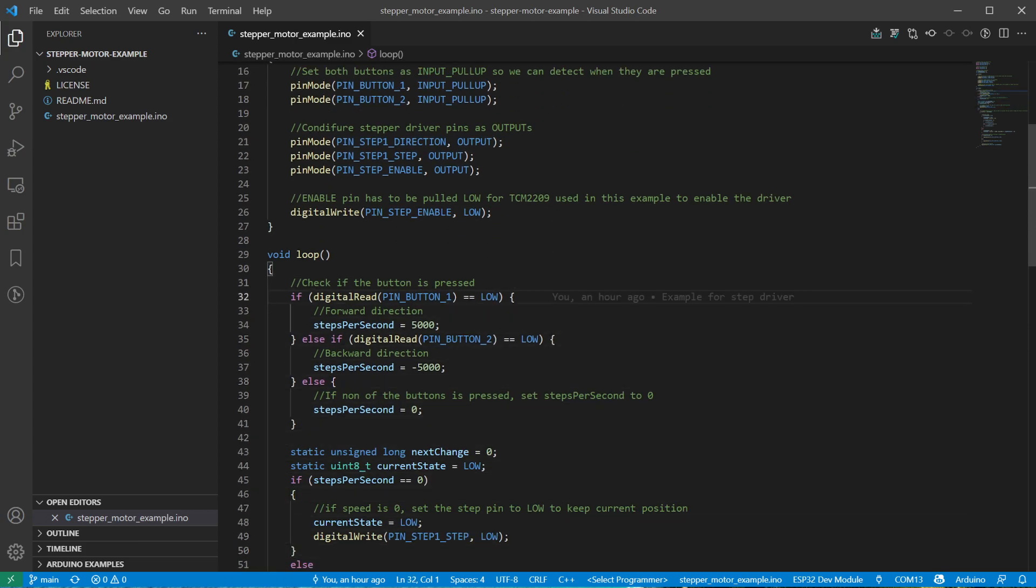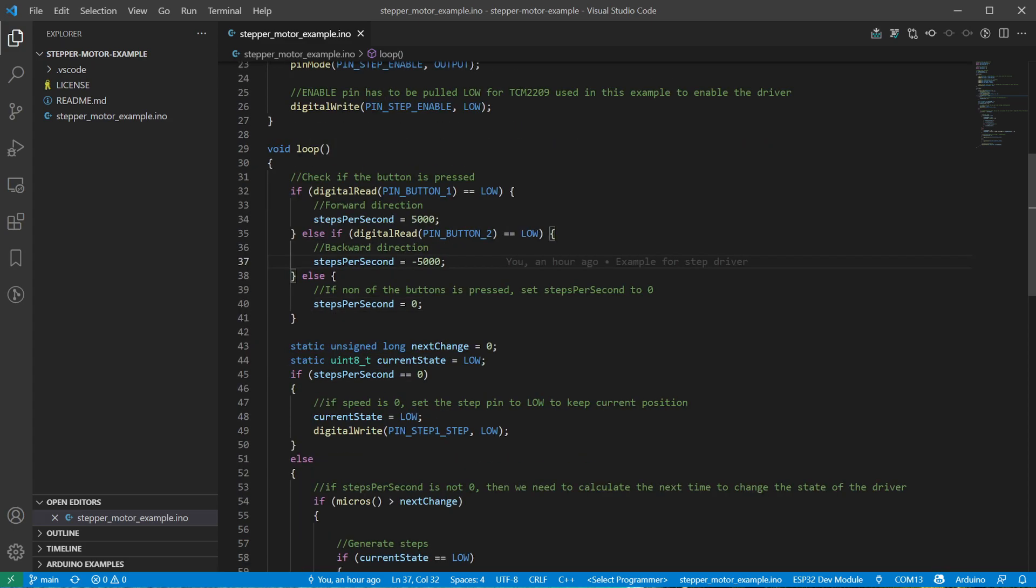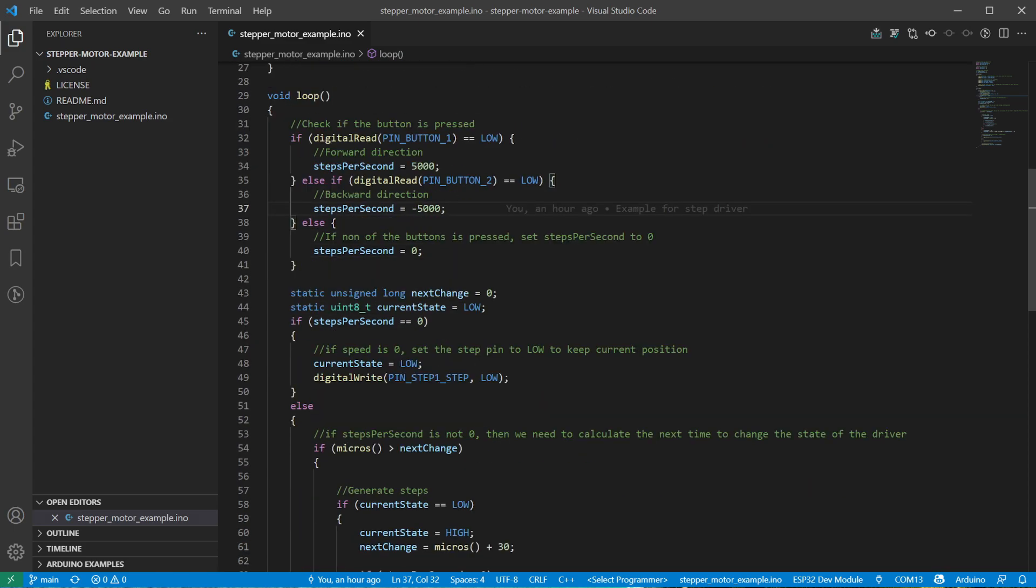And finally a section done when button number one is pressed so it reads low. Remember we are working in the input pull-up mode with the button's other pin connected to ground. We will request five thousand steps per second in one direction, and if the second button is enabled we will require minus five thousand steps per second. And finally if none of the buttons is pressed we request zero rotation speed.